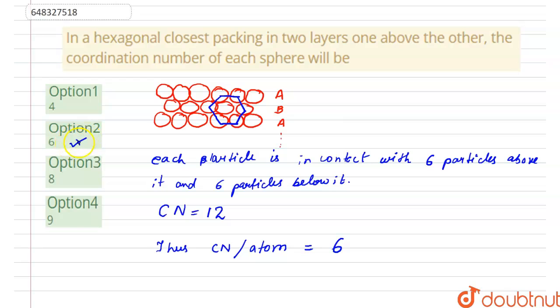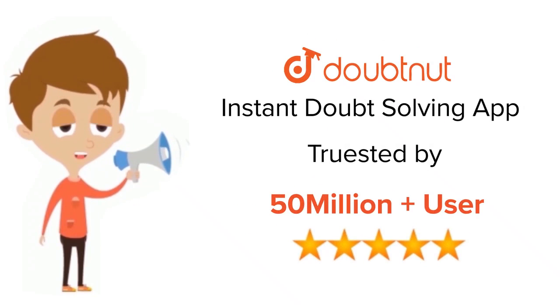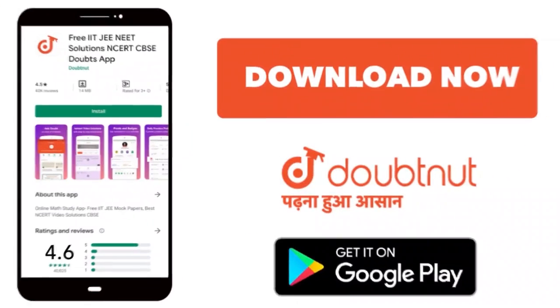So, option two will be the right answer. Thank you. For class 6 to 12, IIT-JEE and NEET level. Trusted by more than 5 crore students. Download Doubtnit app today.